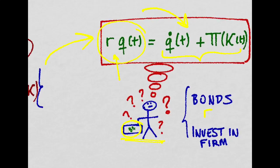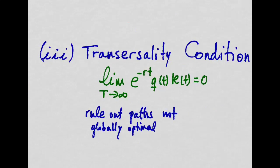And finally, we impose our transversality condition, which will rule out the paths that are not globally optimal. And you will see how important this transversality condition is when we draw the phase diagram for this system.